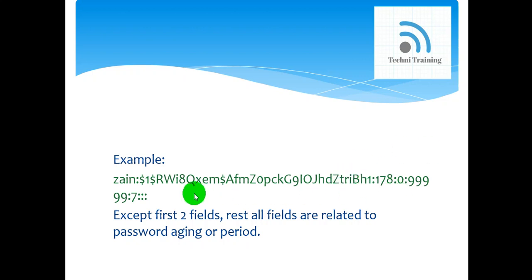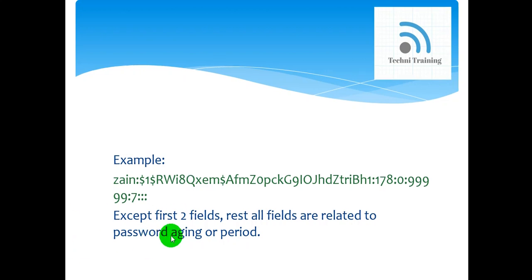The warning days field is the number of days before password expiry. For example, you can set this to seven days so that seven days before expiry you will be warned to change your password — similar to how Windows Server shows password change warnings. It is the number of days before password expiry that a user will start seeing warnings after login. Generally it is set to seven, but it's up to you or your organization based on security policies.